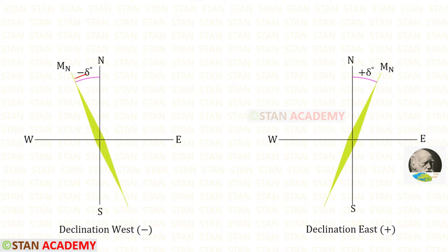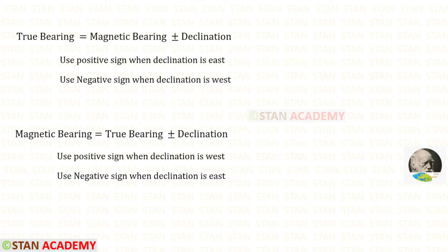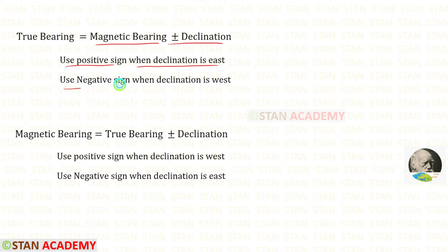We have to take the declination east as positive, because to find the true bearings we have to add the declination to the magnetic bearings. Using this concept, we can derive formulas. To find the true bearing, we use the formula: magnetic bearing plus or minus declination. We use the positive sign when the declination is east and the negative sign when the declination is west.